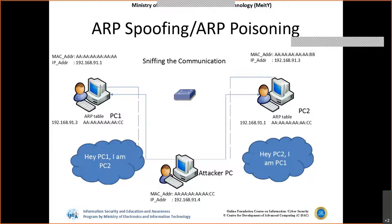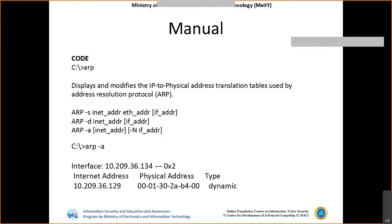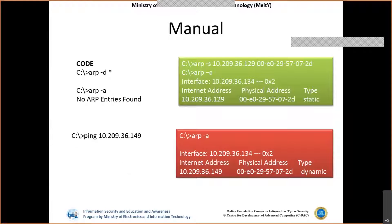ARP spoofing can be done where two destinations can be spoofed with the same MAC address of the attacker. While the two victims are actually talking to each other, the attacker will be getting all the information using this kind of attack. To delete all ARP entries, we can use ARP -d with asterisk, which will delete all the manual entries.